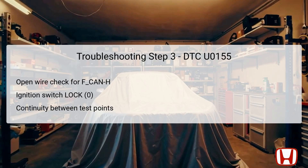For the third troubleshooting step, check for an open wire condition in the F-CAN H line. Turn the ignition switch to the lock position, ensuring the vehicle's systems are powered down. Then, using the HDS, jump the SCS line (short circuit switch) to allow for more detailed diagnostics. Disconnect the ECM connector A 49P and the gauge control module tachometer 32P connector before checking for continuity.